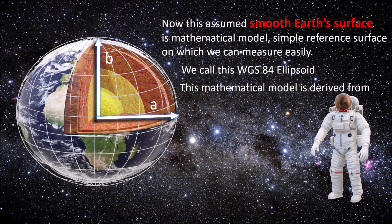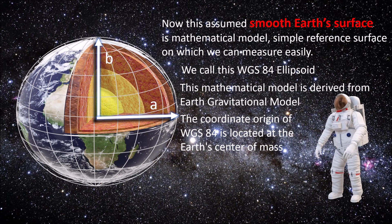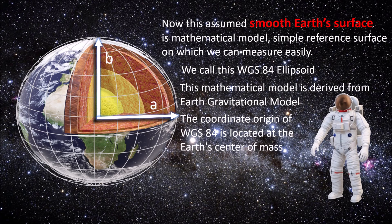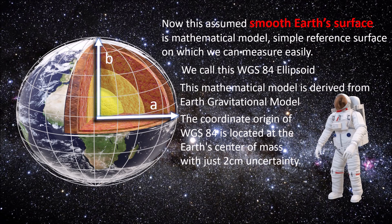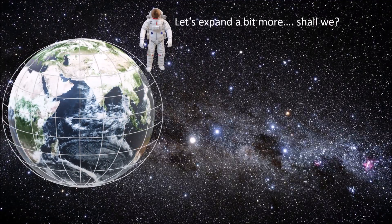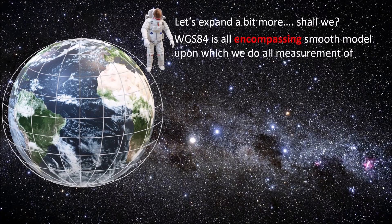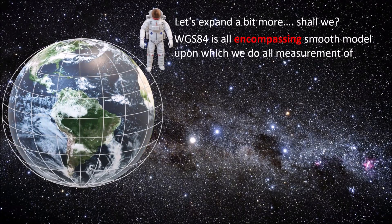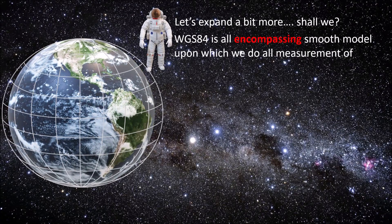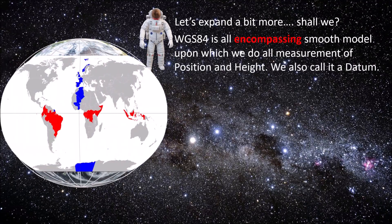This mathematical model is derived from the earth gravitational model. The coordinate origin of WGS84 is located at the earth's center of mass, with just 2 cm uncertainty. WGS84 is an all-encompassing smooth model upon which we do all the measurement of position and height. We also call it a datum.